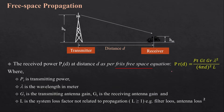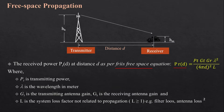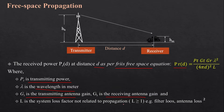The free space equation states that Pr(d) equals Pt × Gt × Gr × λ² divided by (4πd)² × L. Here, Pr(d) is the received power at distance d between transmitter and receiver, Pt is the transmitted power, Gt and Gr are the gains of the transmitter and receiver, λ is the wavelength of the signal, and L is the system loss factor, which is not related to propagation but is always greater than or equal to 1 — for example, filter loss or antenna loss.